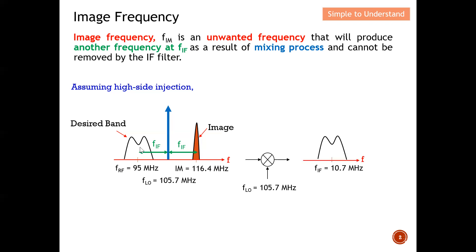Looking at the output of the mixer: we want to receive the desired band from Class 95 so we can hear the DJ voice. However, the image is also separated from LO by exactly FIF, so it will also appear at the output of the mixer. Therefore the output is a combination of the desired band and the image, and we probably cannot hear the DJ voice clearly — hence we need to find a way to reject the image.